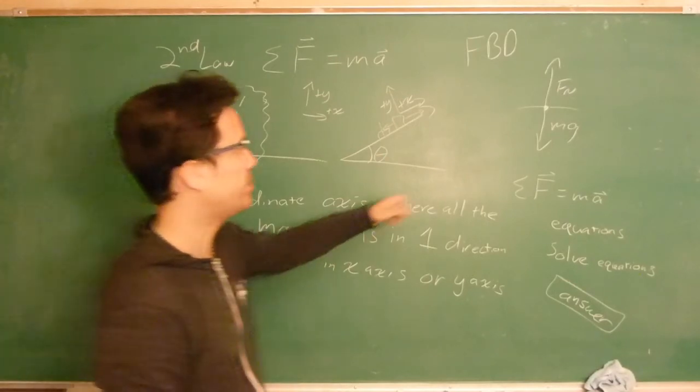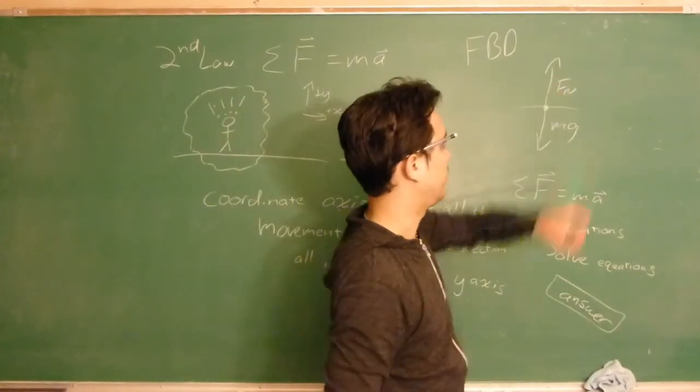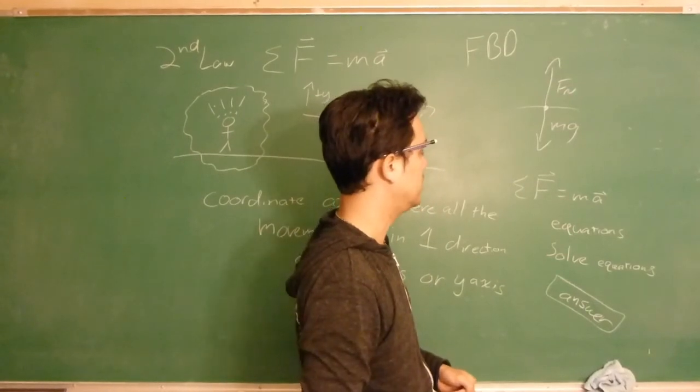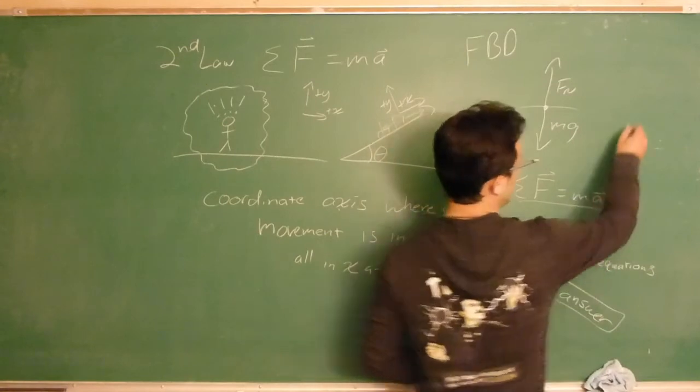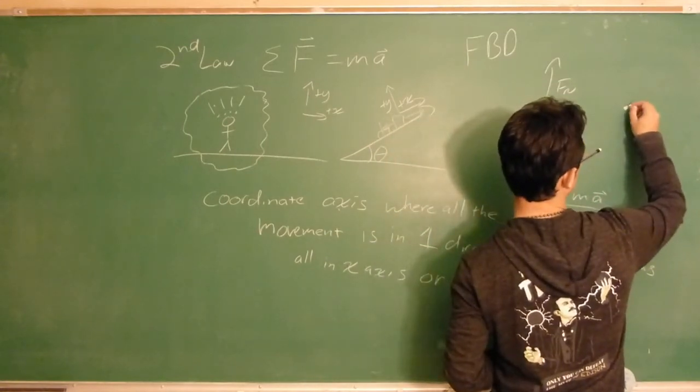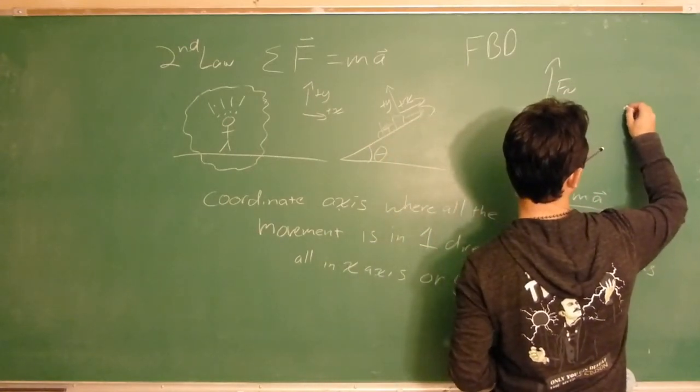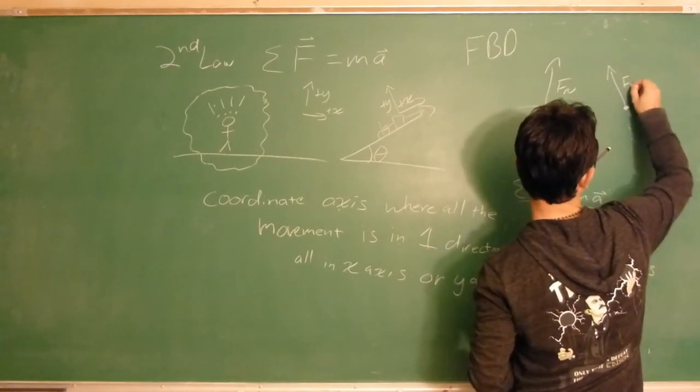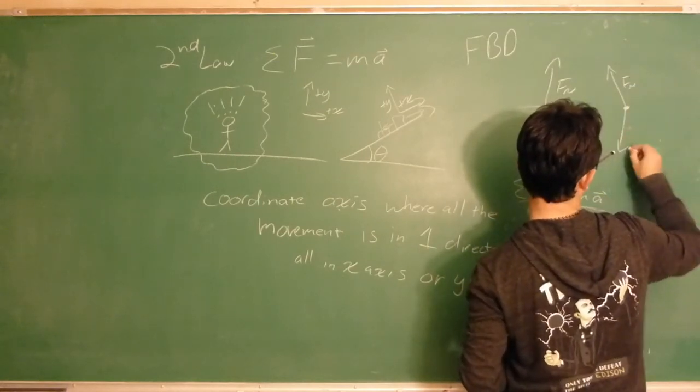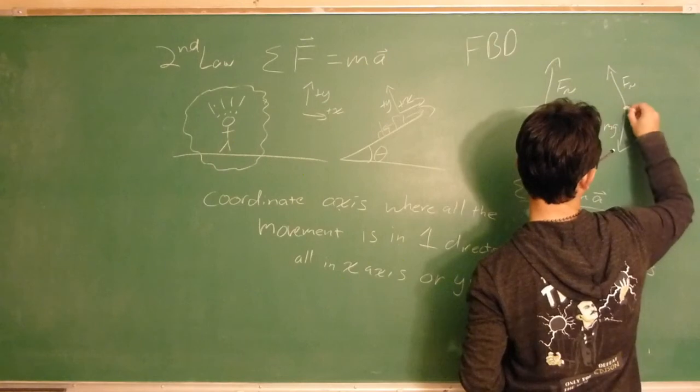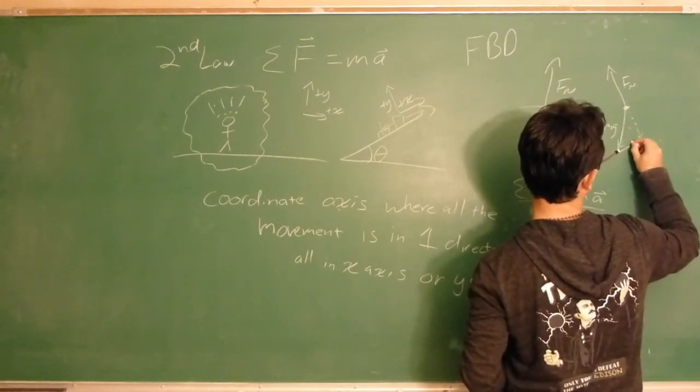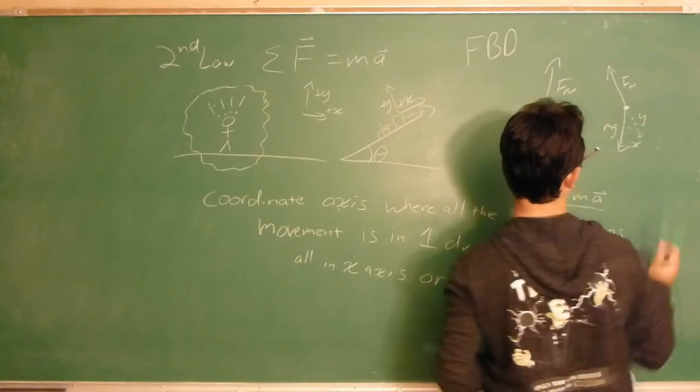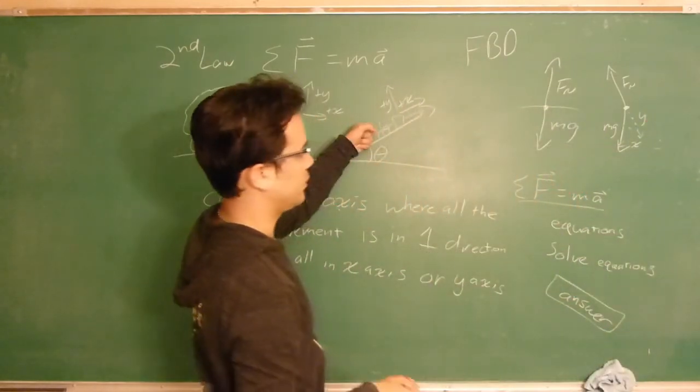Once you have your coordinate system set up, you can draw your free body diagram and draw all of your forces in. What you'll need to do then is apply Newton's second law, and if you've got forces, which sometimes you will, where you've got your normal force up like this, say on an incline plane, and your force of gravity down like this, you may need to split them into components. So I've got my x component here, my y component here, just like over here on the incline plane.